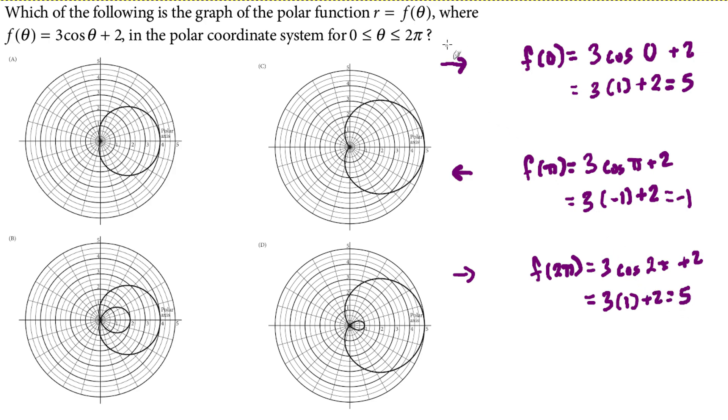So, when I'm pointing right, I go right 5. When I'm pointing left, I go left negative 1. And then when I come back around, pointing right, I go right 5. So let's see. The 5s.